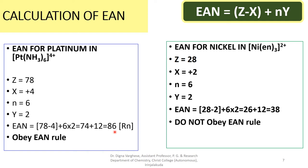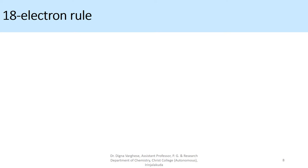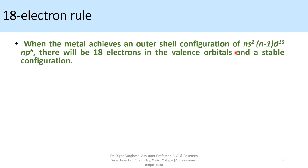The calculation of EAN can be more generalized in terms of the 18-electron rule. When the metal achieves a configuration of ns², (n−1)d¹⁰, np⁶, there will be 18 electrons in the valence orbitals, giving a stable configuration. This rule is referred to as the 18-electron rule. The valence orbitals contribute 2 electrons from the s orbital, 10 electrons from the five d orbitals, and 6 electrons from the three p orbitals, totaling 18 electrons — a highly stable configuration.